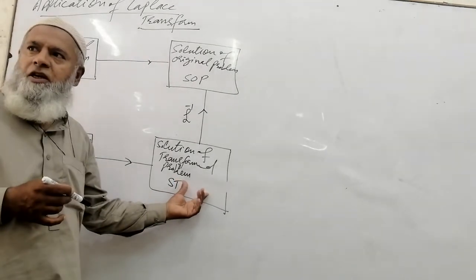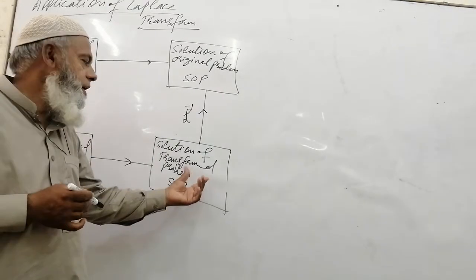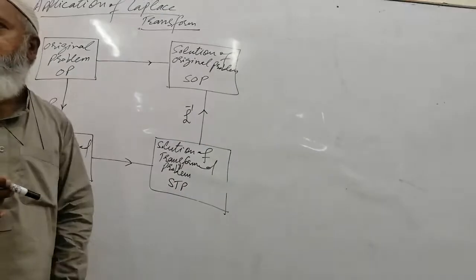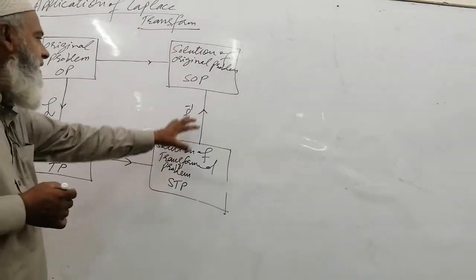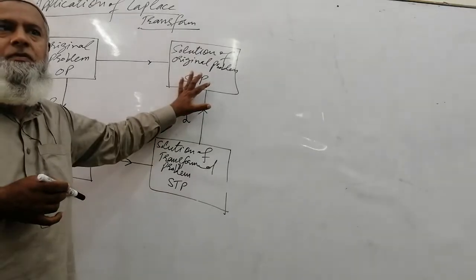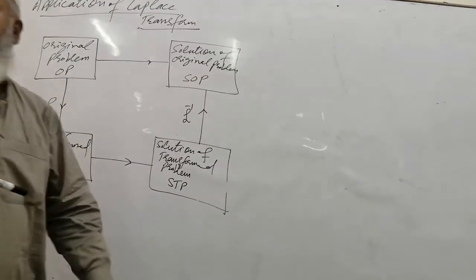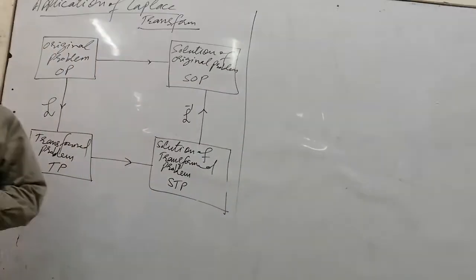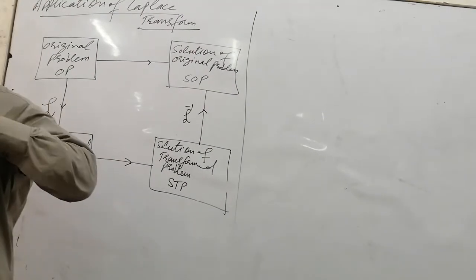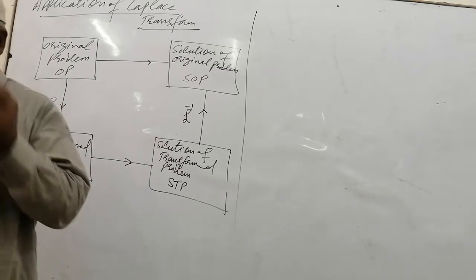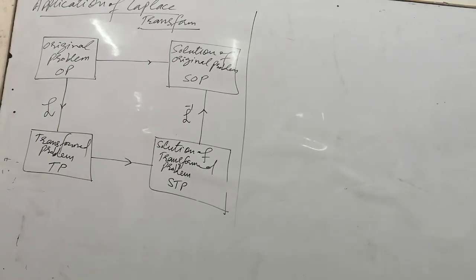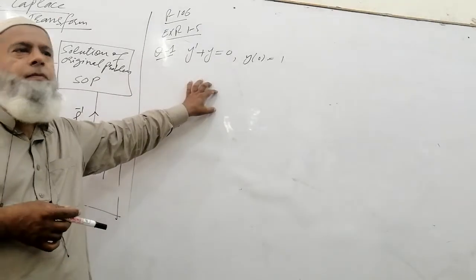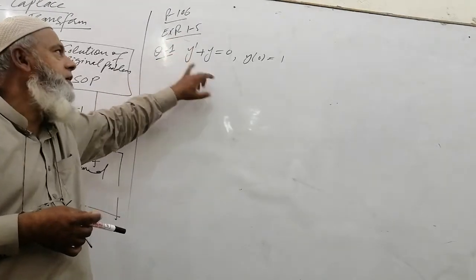Then we get the solution of the transform problem, and by taking the inverse Laplace transform of this we reach the solution of the original problem. So we are adopting this indirect way of getting the solution of the original problem. Now we solve the question from exercise 1.5.